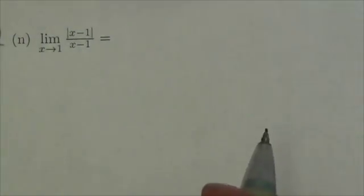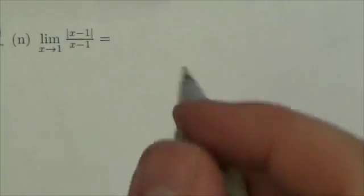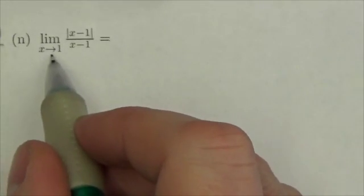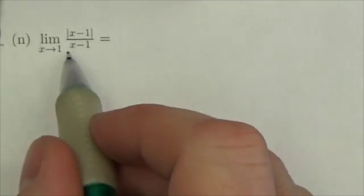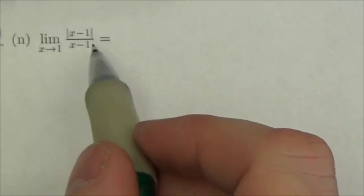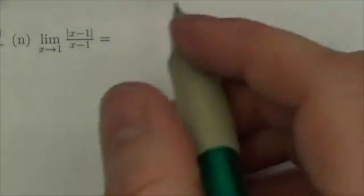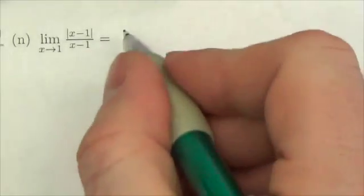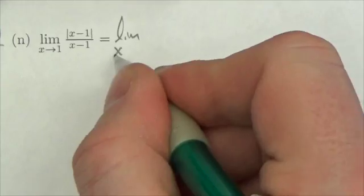Okay everybody, we're working on the Math 31 limits review, this is question 1n. We're taking the limit as x approaches 1 of the absolute value of x minus 1 over x minus 1. Well, if you plug 1 in, the absolute value is going to go to 0, the denominator is going to go to 0, so this is going to be the indeterminate form.